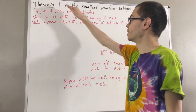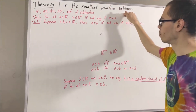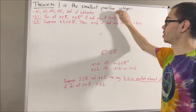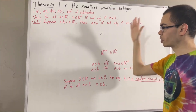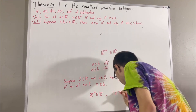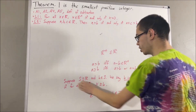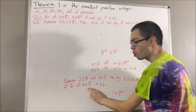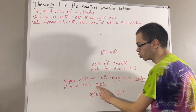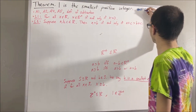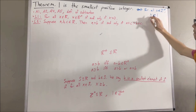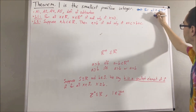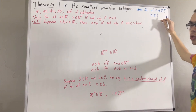We are trying to prove that one is the smallest positive integer. In our real number system the positive integers are defined as a subset of the real numbers, and we have shown that one is a positive integer. Plugging this into the definition of smallest element, to say that one is the smallest positive integer means: for all positive integers n, n is greater than or equal to one.